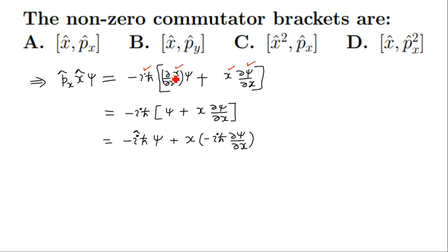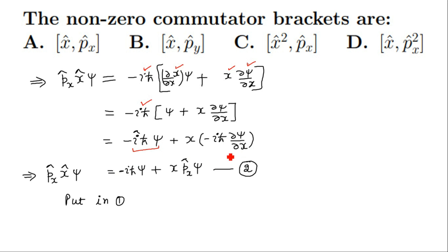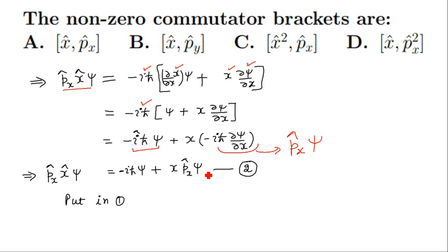The derivative del x by del x is 1, so it becomes psi. Taking minus iota h-cross inside the bracket gives minus iota h-cross psi plus x times minus iota h-cross del psi by del x. This second term is p-x-cap psi. Therefore p-x-cap x-cap psi equals minus iota h-cross psi plus x p-x-cap psi.